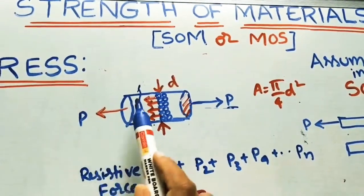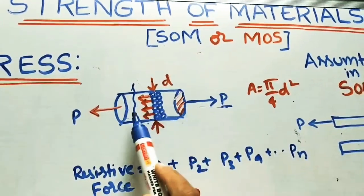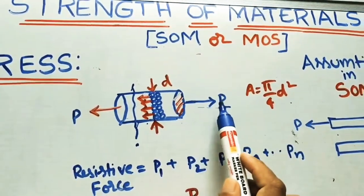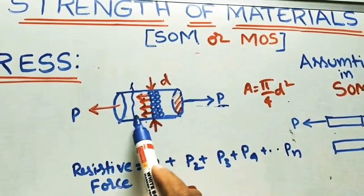As we are studying this effect, just draw the line here. This is a separate part. Now we are taking this part. This side is P is applying and this side resistive forces.